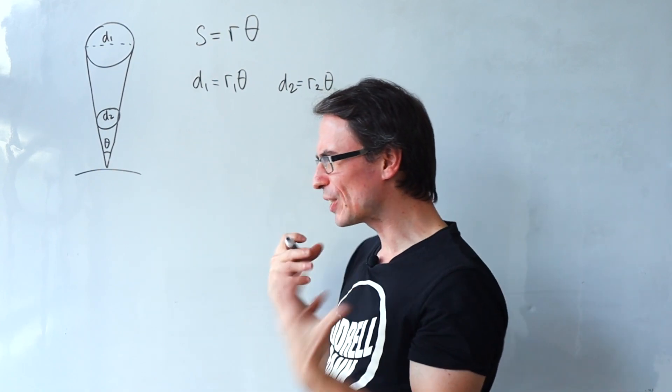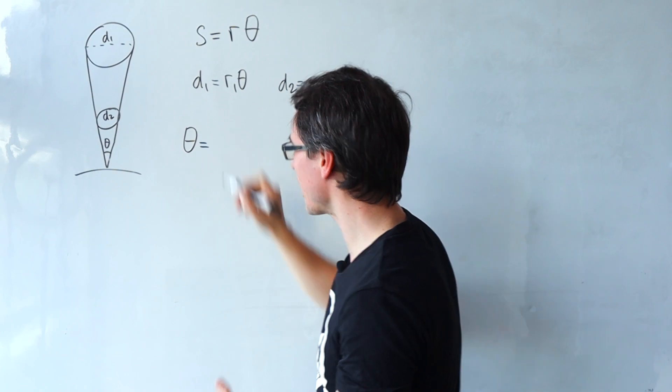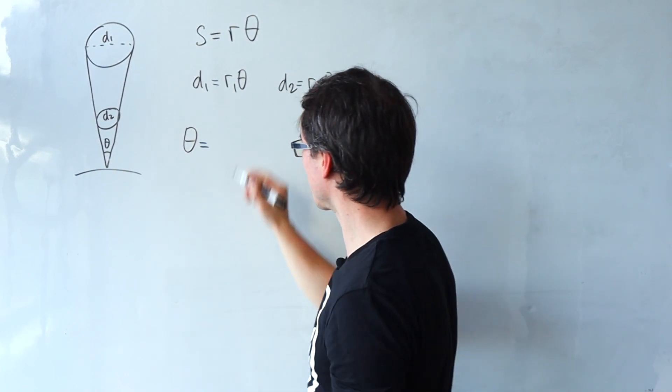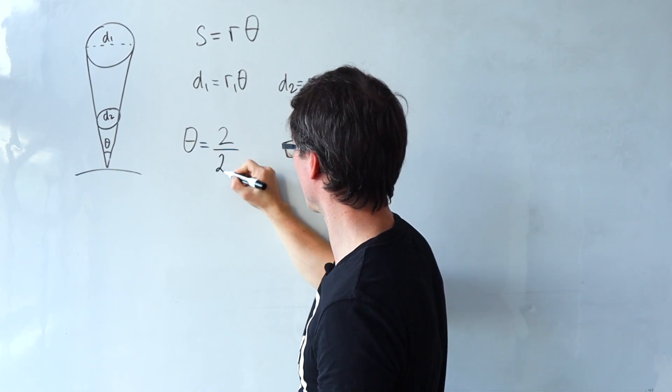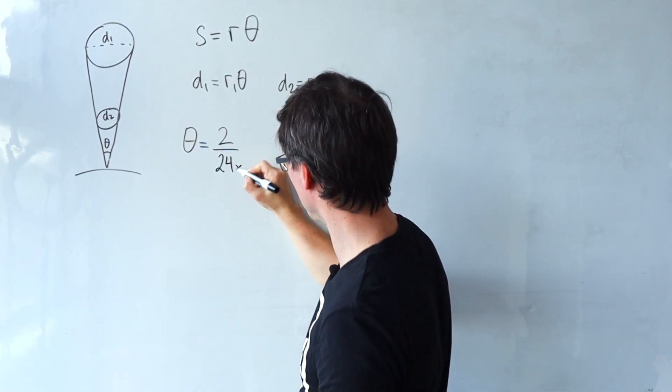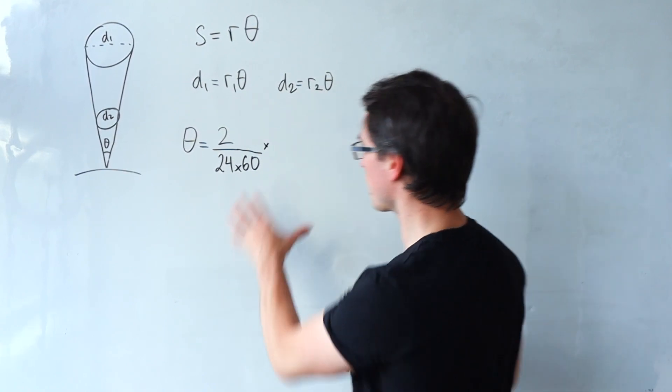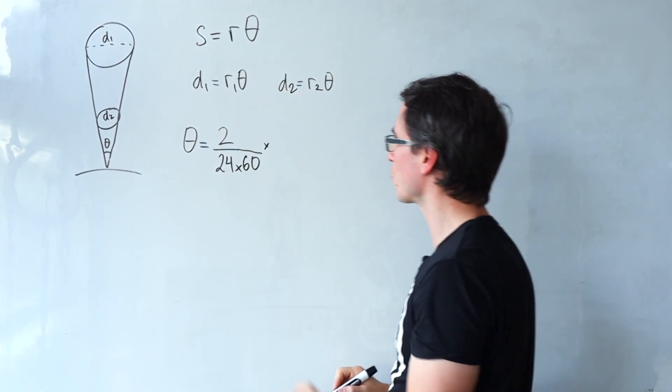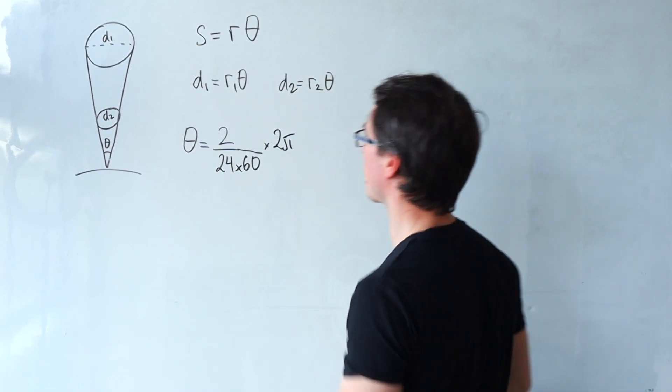Remember that it takes approximately two minutes to go from here to here but one full rotation is 24 hours so theta should just really be 2 divided by 24 hours times 60 minutes and then this here will be a fraction of one full rotation which is 360 degrees or let's just call it 2 pi radians.